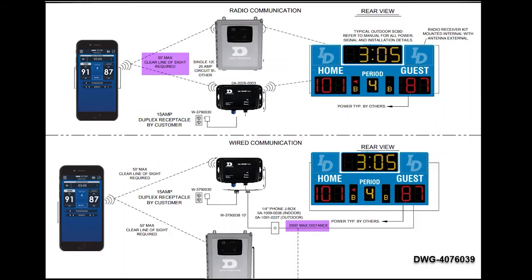Note that the DAC Score app uses Bluetooth Low Energy, or BLE, to communicate with the Allsport MX1. Here is an example of the signal flow for both the wired and the radio communication.